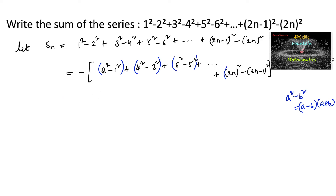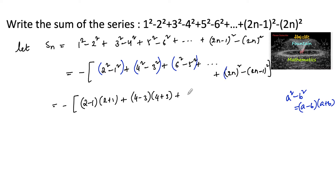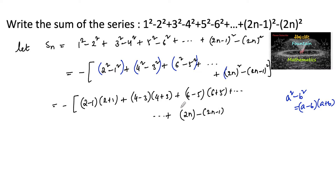So we can write: minus of [(2 - 1)(2 + 1) + (4 - 3)(4 + 3) + (6 - 5)(6 + 5) + ... + (2n - (2n-1))(2n + (2n-1))].